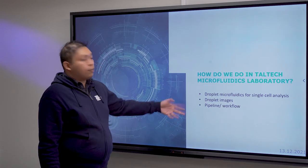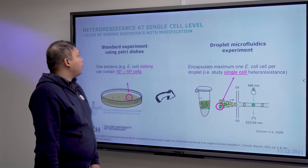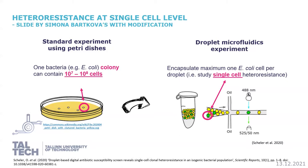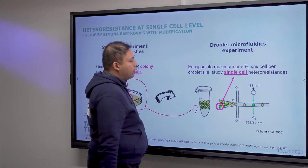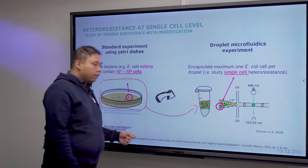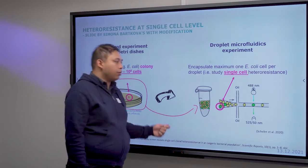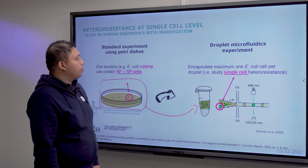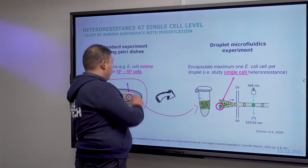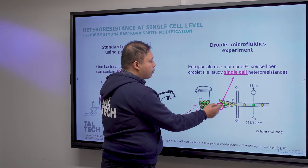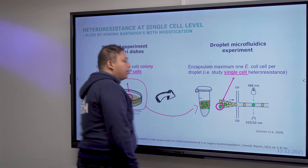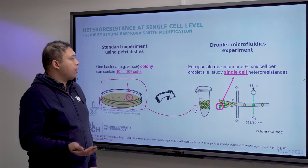Here is an example of antibiotic resistance at the single cell level. Usually we have petri dish systems where we culture bacteria and add antibiotics, but instead of using that system we use droplets. We can use microfluidics to generate these droplets, or just use a vortex to generate polydispersed droplets.